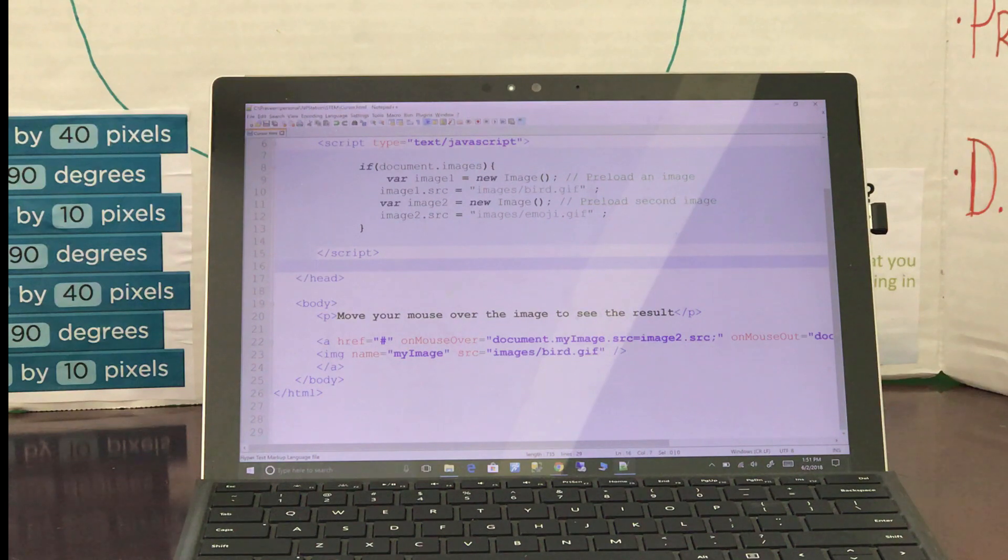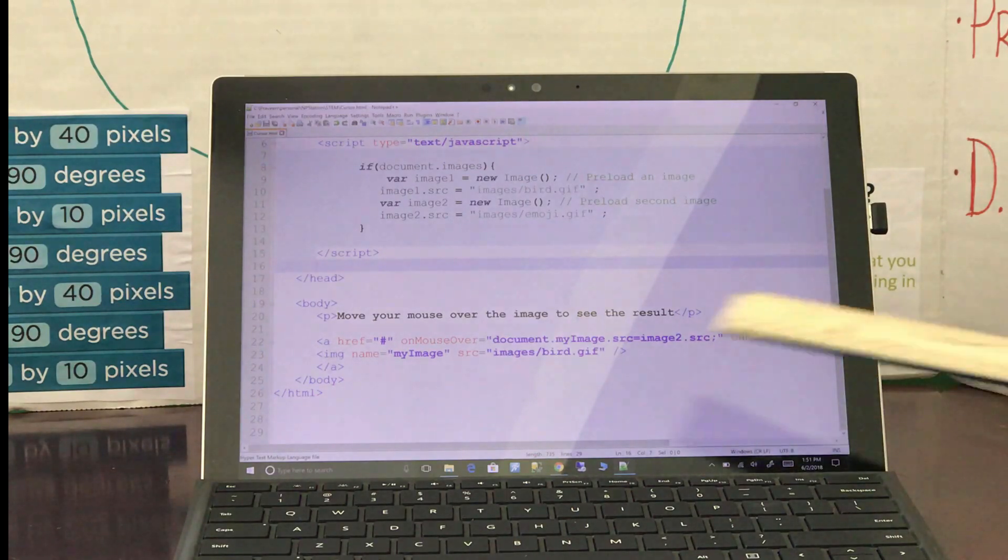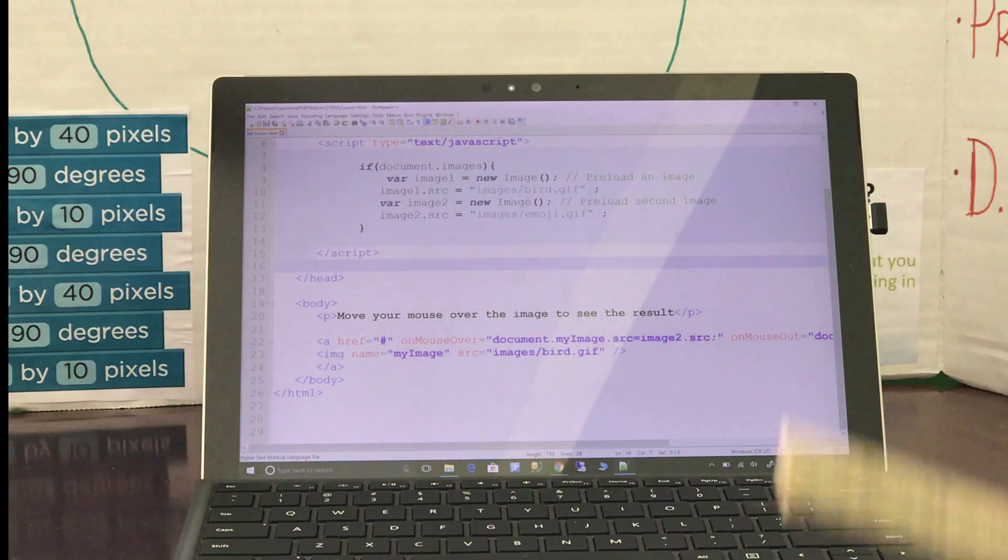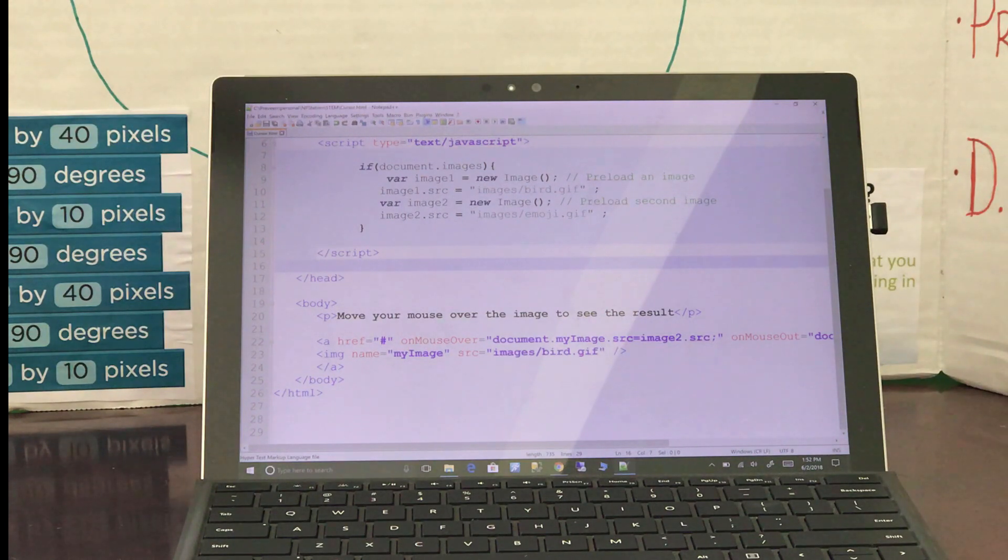Events are commands given to the computer to perform when the event occurs. We set the source of the image on the screen to image two, which is the emoji, on mouse over. We set the source of the image to image one, which is bird, on mouse out.